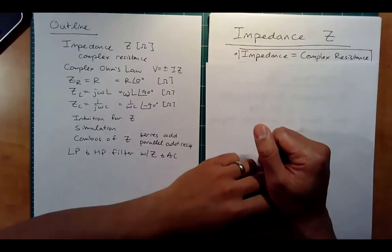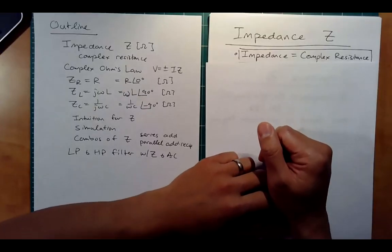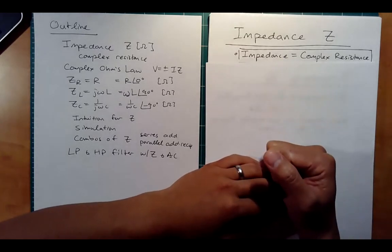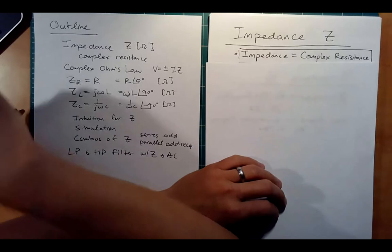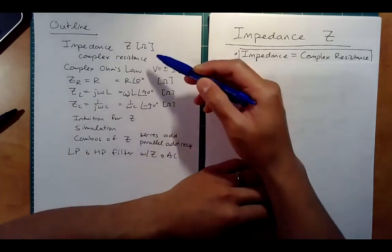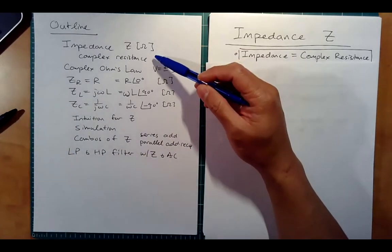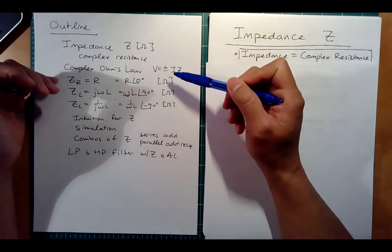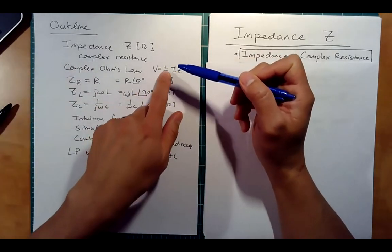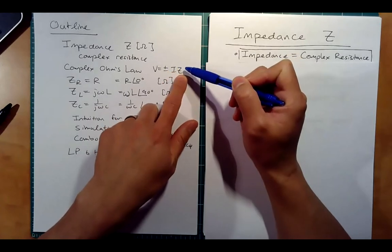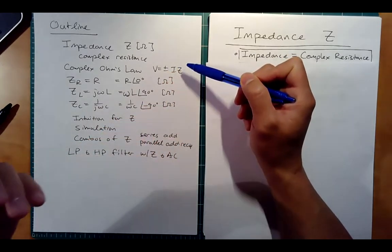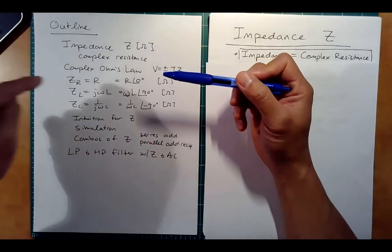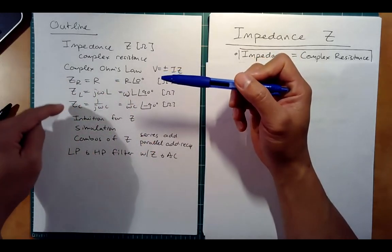Hi, this is ET250 lecture 21. Today we are going to continue our discussion on AC circuits and we're going to introduce this concept called impedance, which is just complex resistance. We'll bring up complex Ohm's law and we'll have V equals plus or minus IZ, and we'll get the impedance for different systems: the resistor, the inductor, and the capacitor.